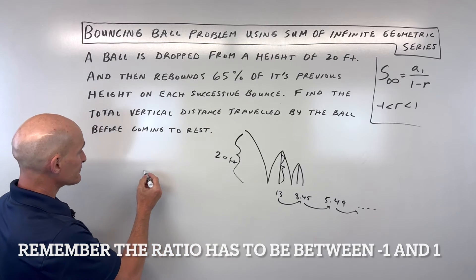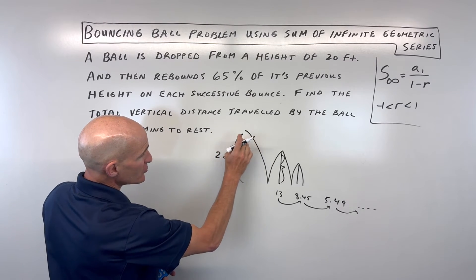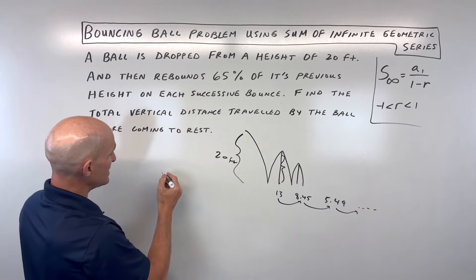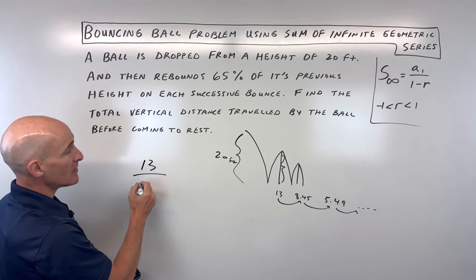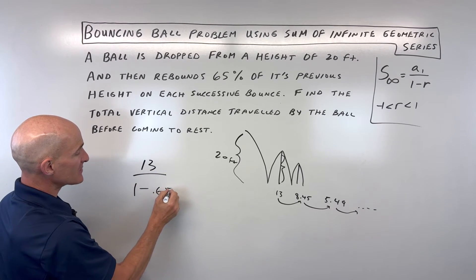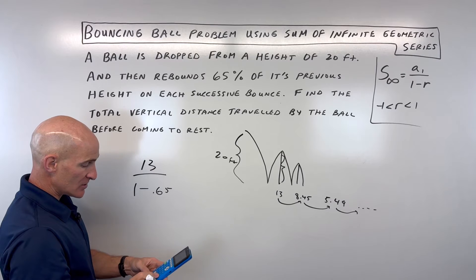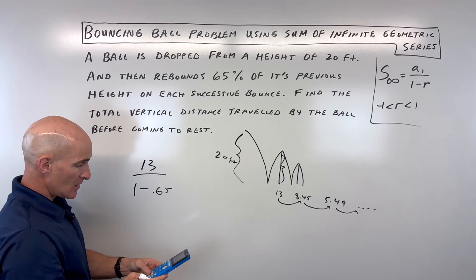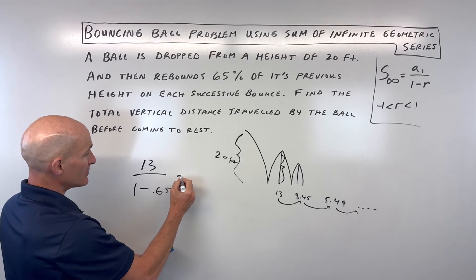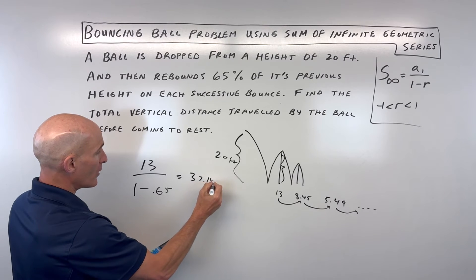If we were to look at that, we're going to ignore the initial drop of 20 feet. We're going to start with 13, and I'll show you why. So 13 over 1 minus 0.65, that comes out to about 37.14.